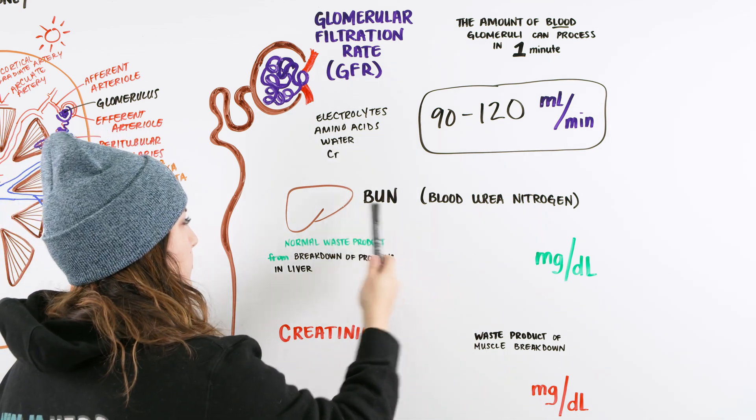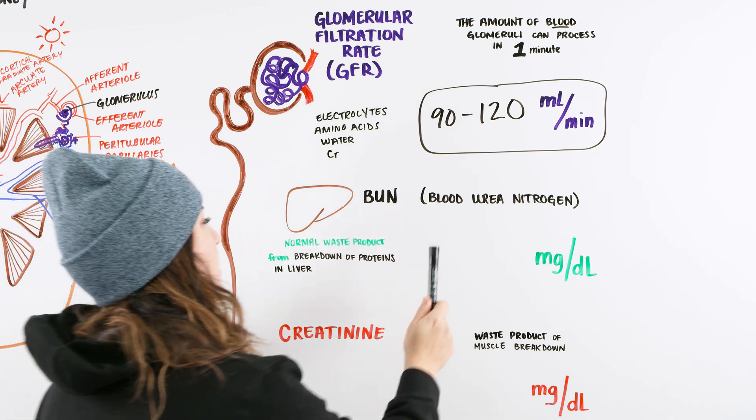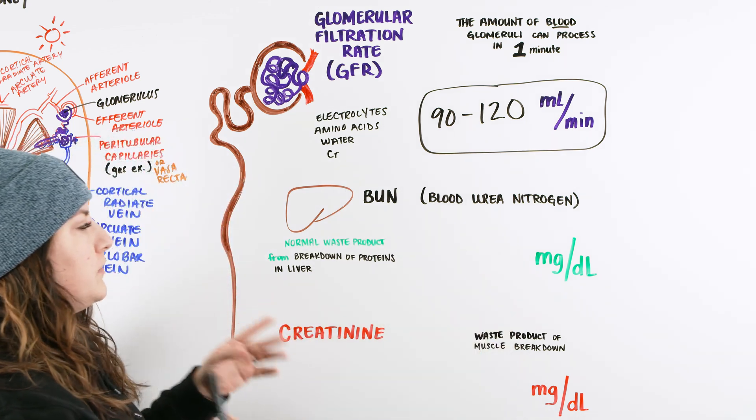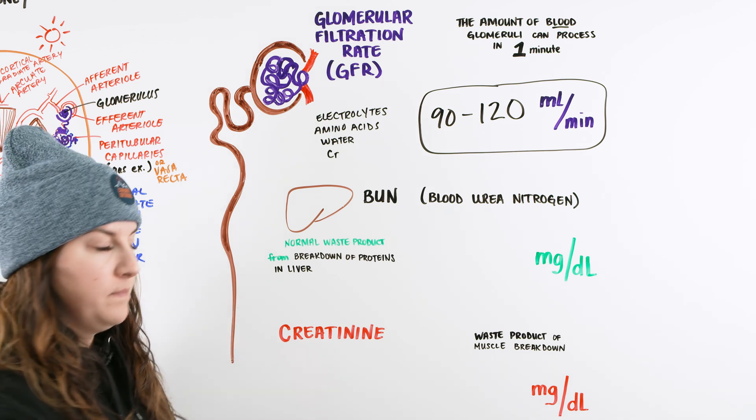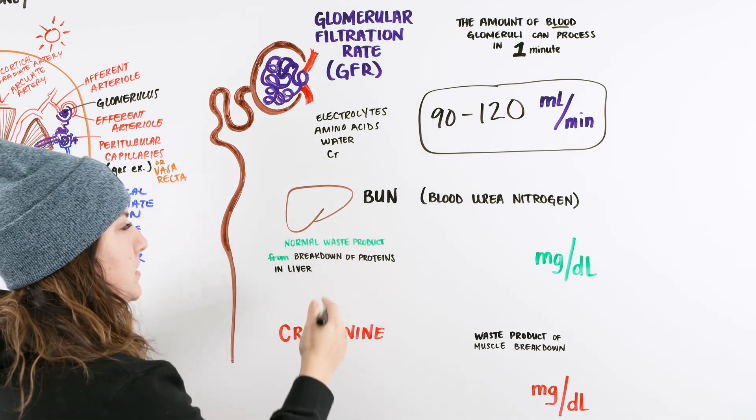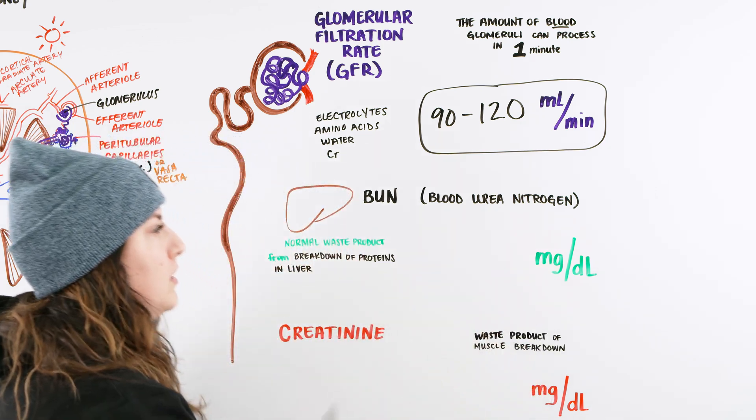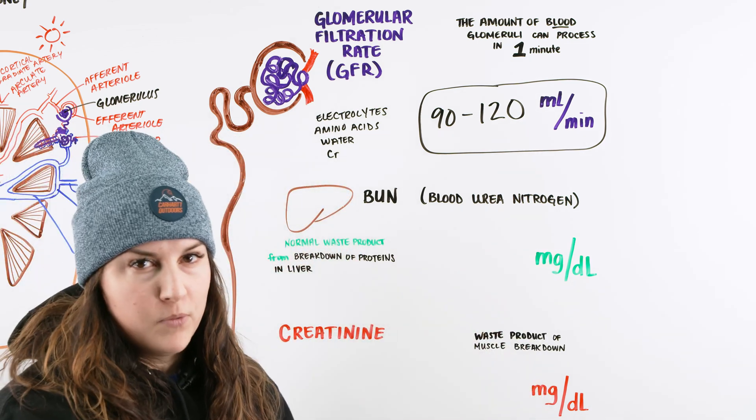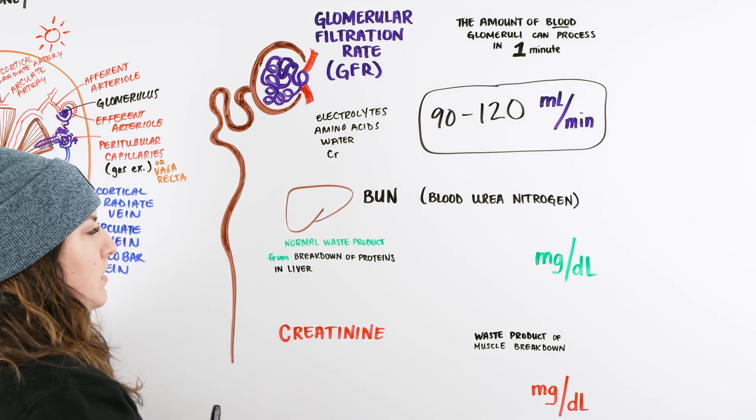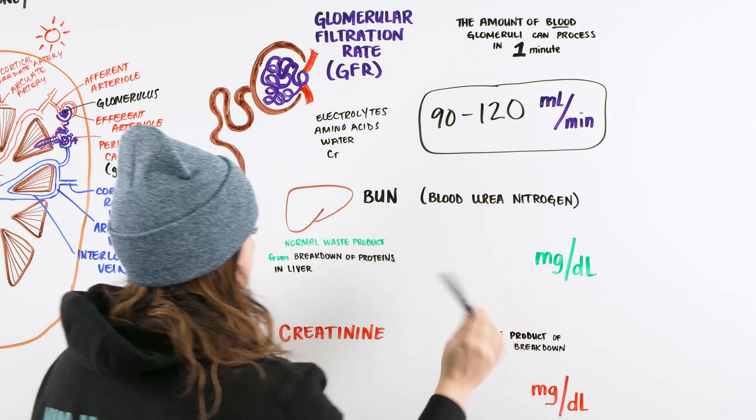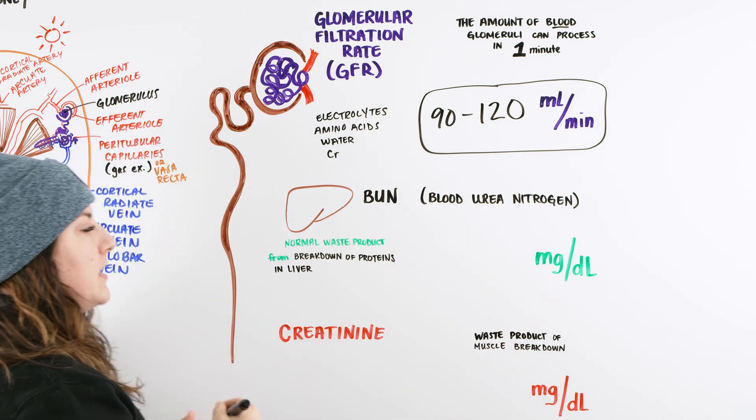So then we move into our BUN. BUN is also known as our blood urea nitrogen. That is the normal waste product for a breakdown of proteins. So the liver is going to break down these proteins. It's going to have blood urea nitrogen, things that are present within our blood normally. And I want you to keep that in mind is that it's normal to have BUN. It's normal to have a blood urea nitrogen.